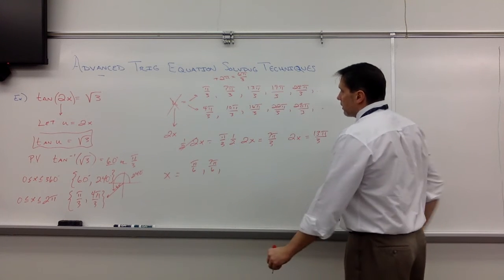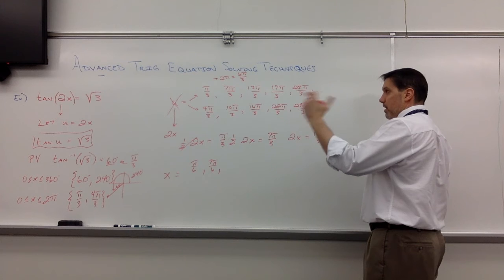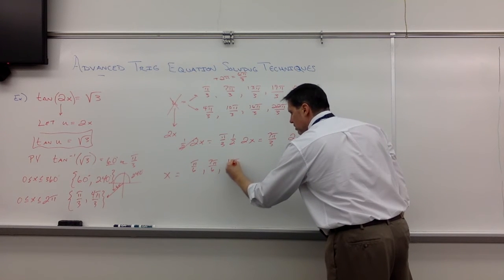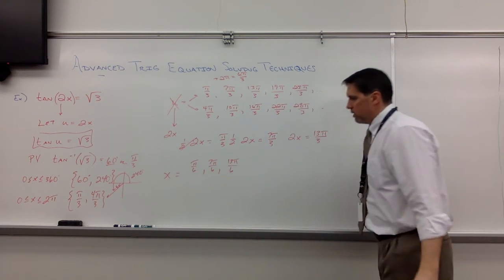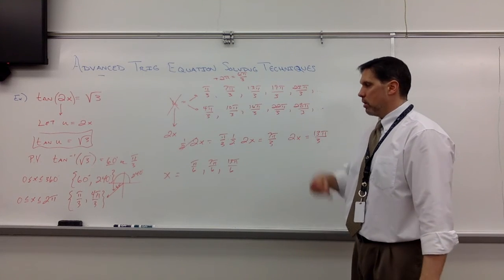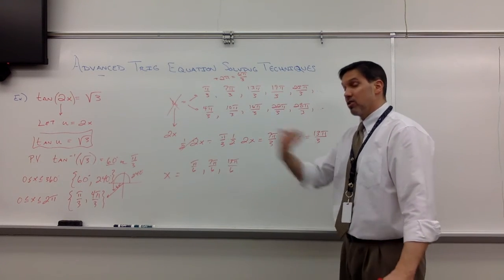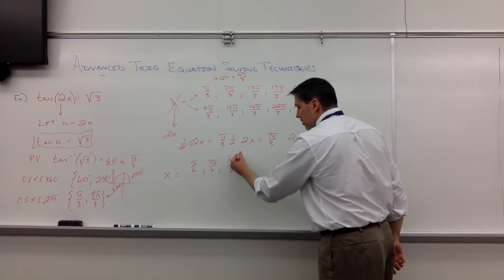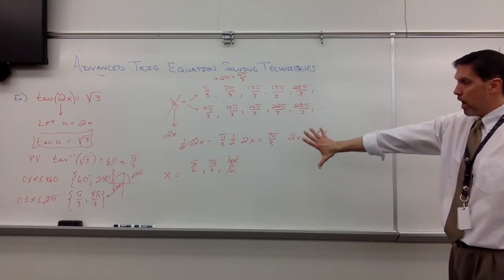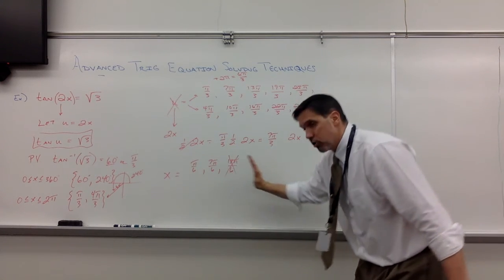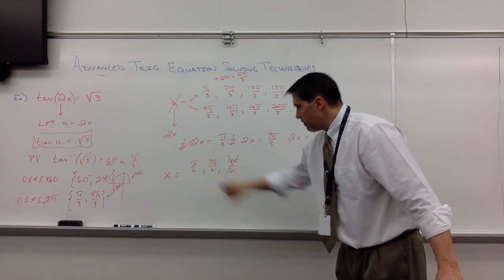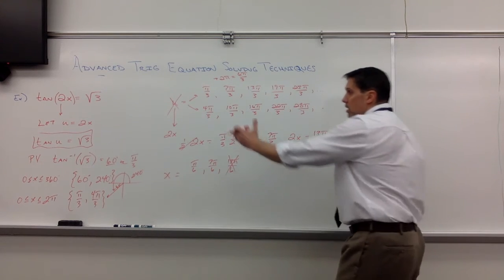13π thirds divided by times 1 half is 13π/6. Wait a minute. 6 goes into 13, 2, and some change. 2 and 1 sixth time, so you're past the 2π threshold. We're only going 0 to 2π. So, 7π/6, we hit our limit.